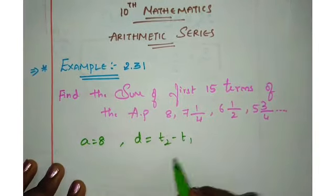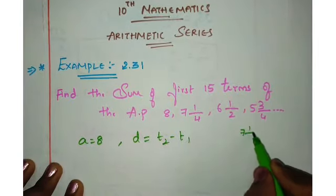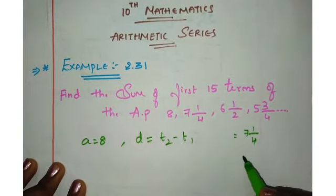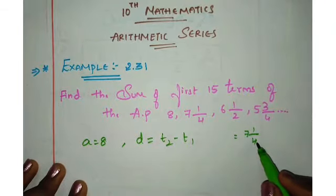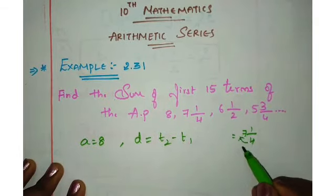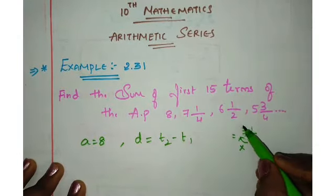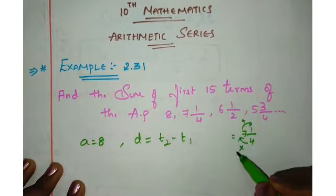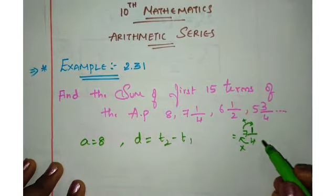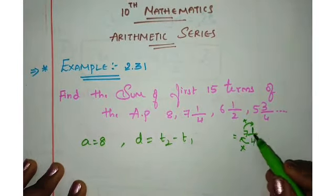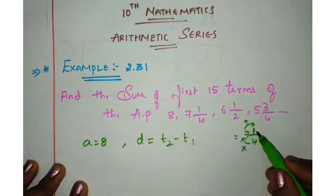That is 7, 1 by 4. So we can reduce this. How do we reduce the fraction? 7 into 4 is 28. We multiply these two terms. Now, we add these two terms. That means the answer comes in the numerator. 7, 4 is 28. 28 plus 1 is 29.